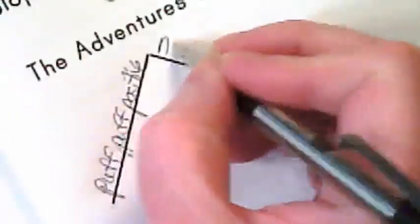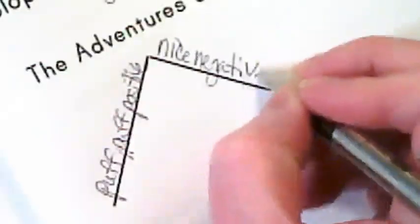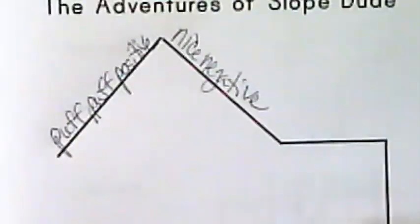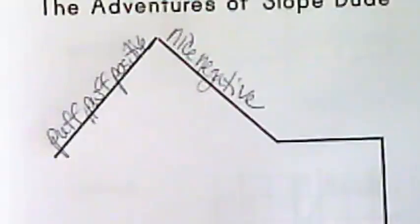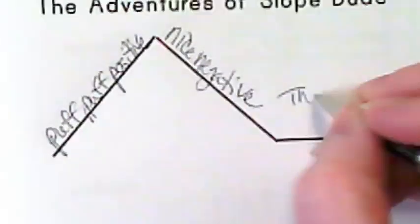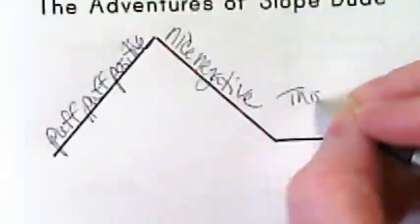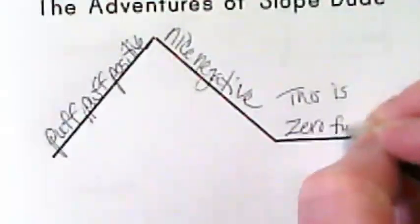What does he say as he's going down the hill? Because he likes to go down. And for the flat part, he says 'this is zero fun.'